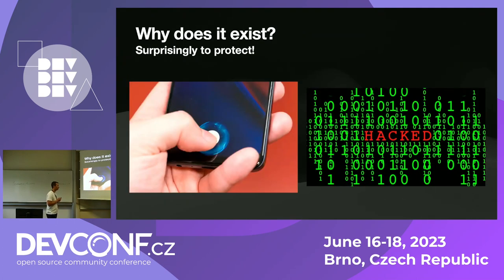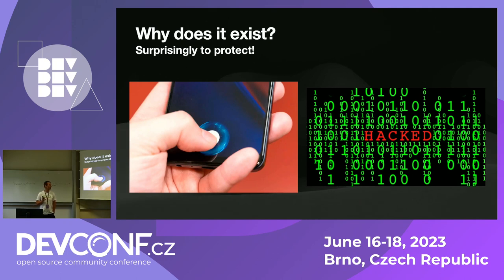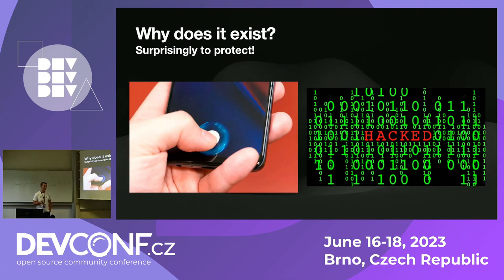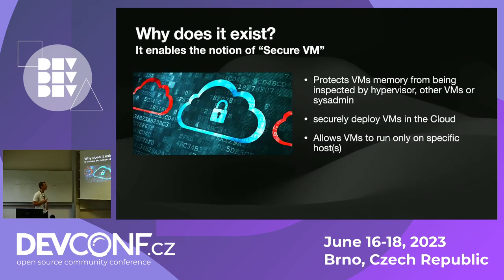Why do we care about security and what kind of security do we use on a daily basis? The most simple example is a phone. A lot of people use Touch ID or Face ID — even if the phone is stolen, a bad actor cannot unlock it and see messages, photos, or anything like that. For similar reasons, Secure Execution exists.